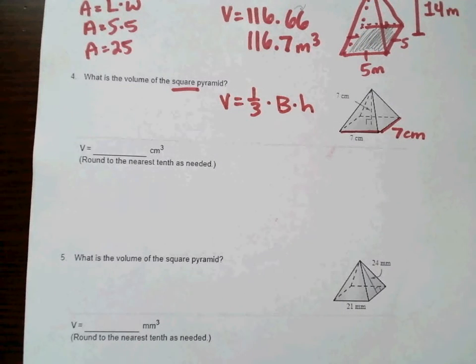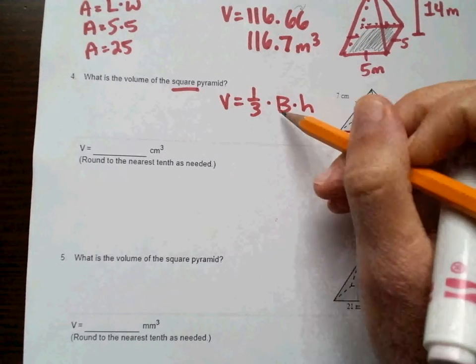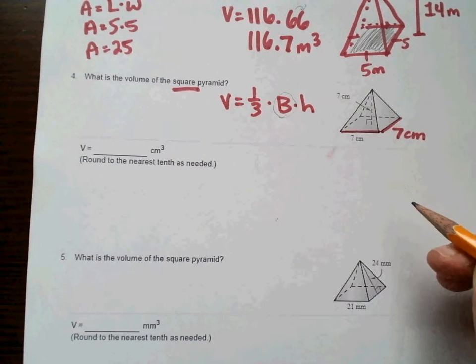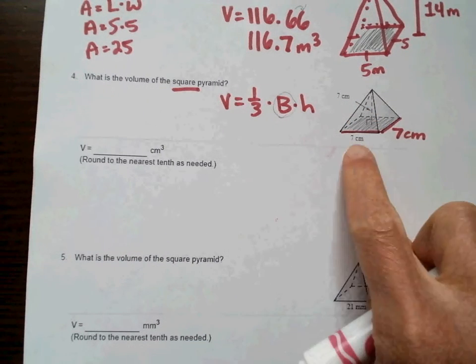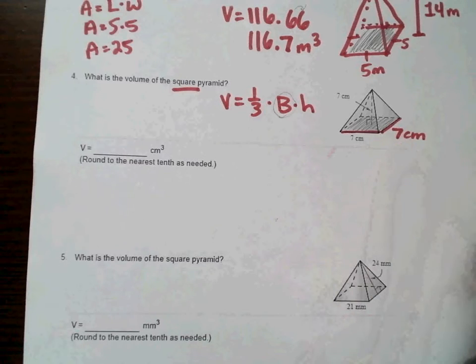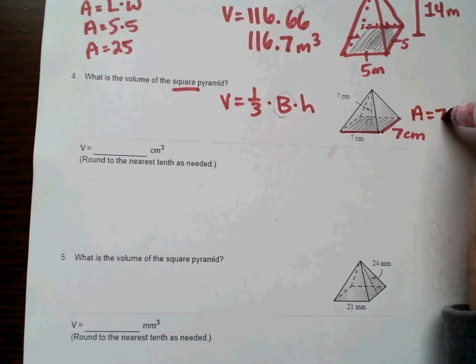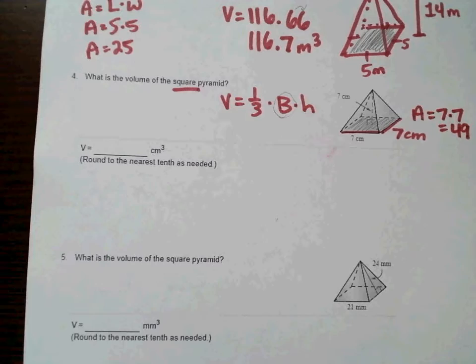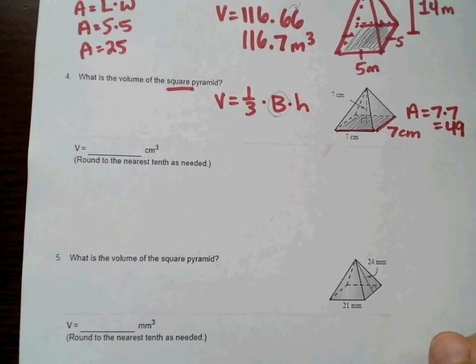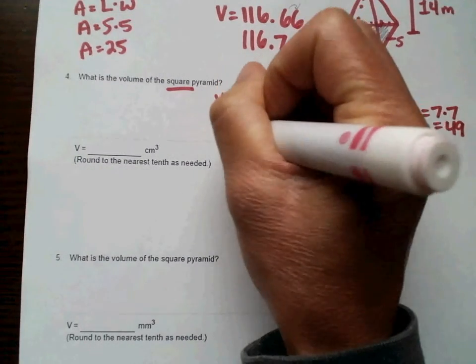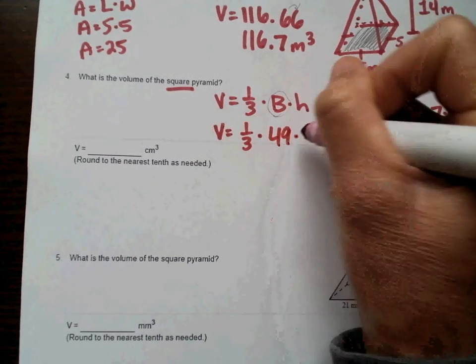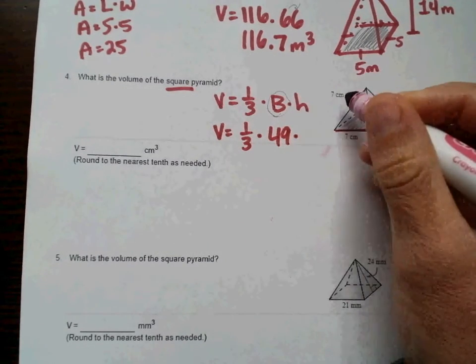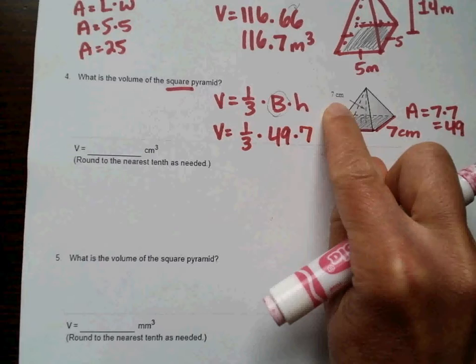And, in for area of the base, this B, that's where you've got to be careful here. That's the area of the bottom part. So, the area of that square is 7 times 7, which gives you 49. So, that's the number that's going in for big B. So, volume equals one-third times 49 times the height of the pyramid, which is 7. Right there, we see a height.